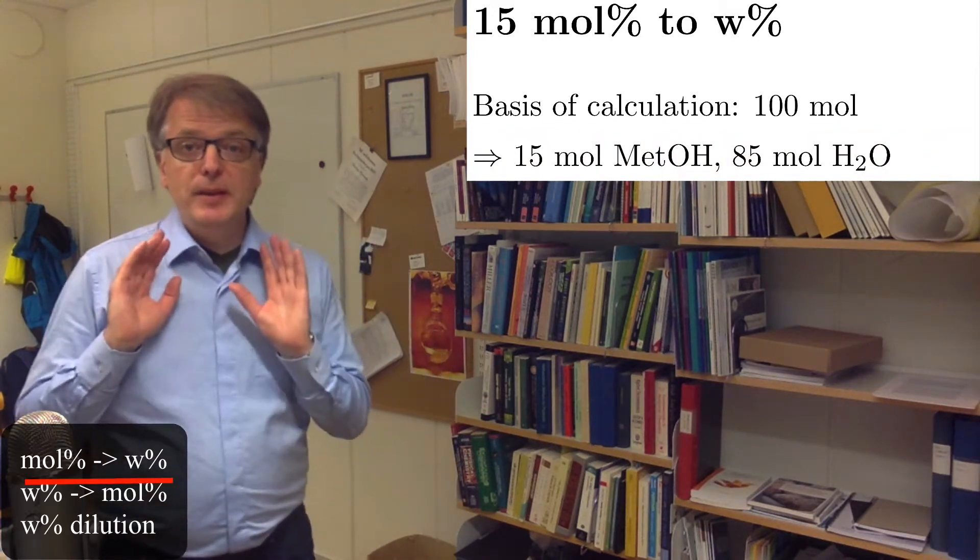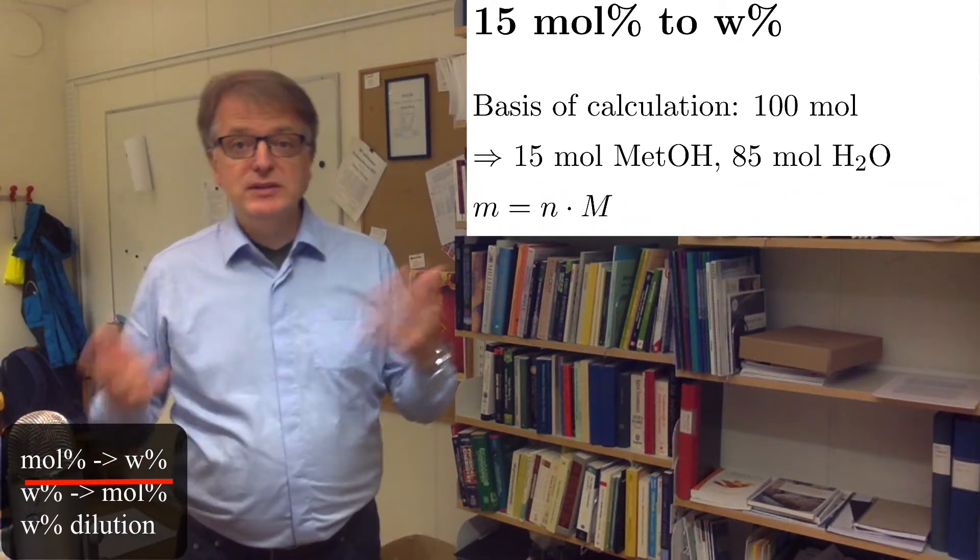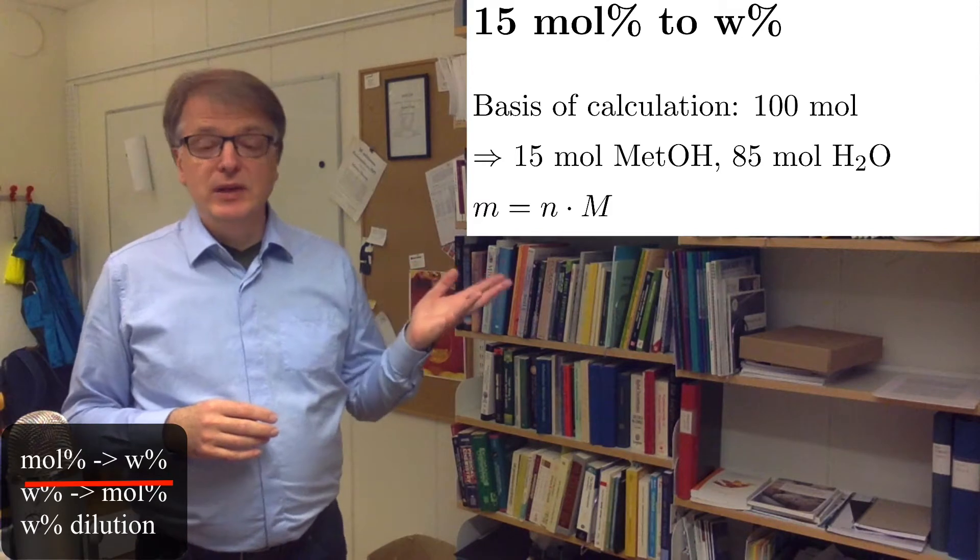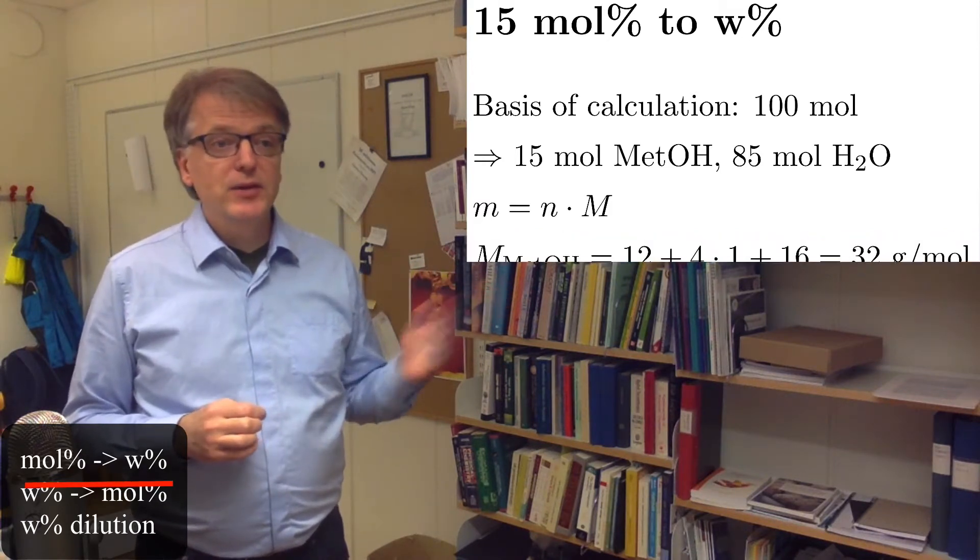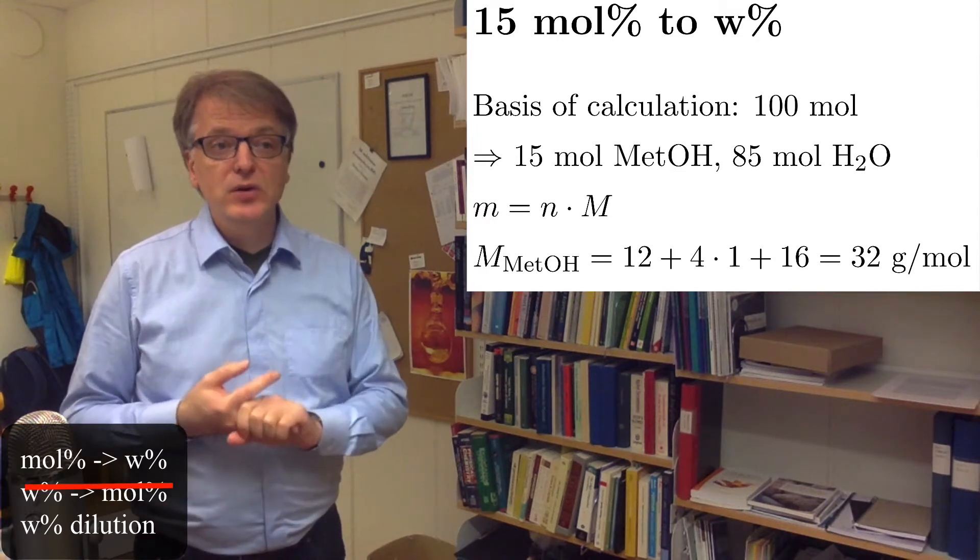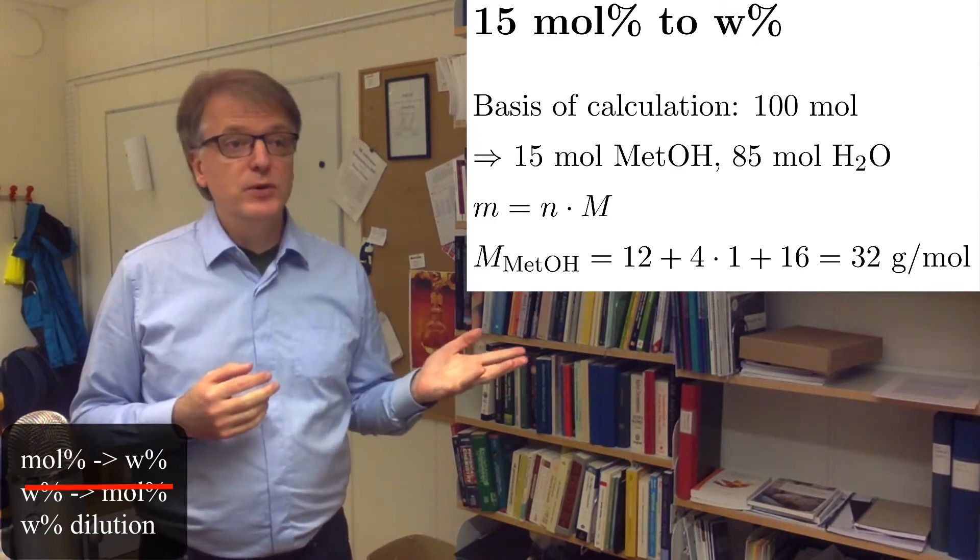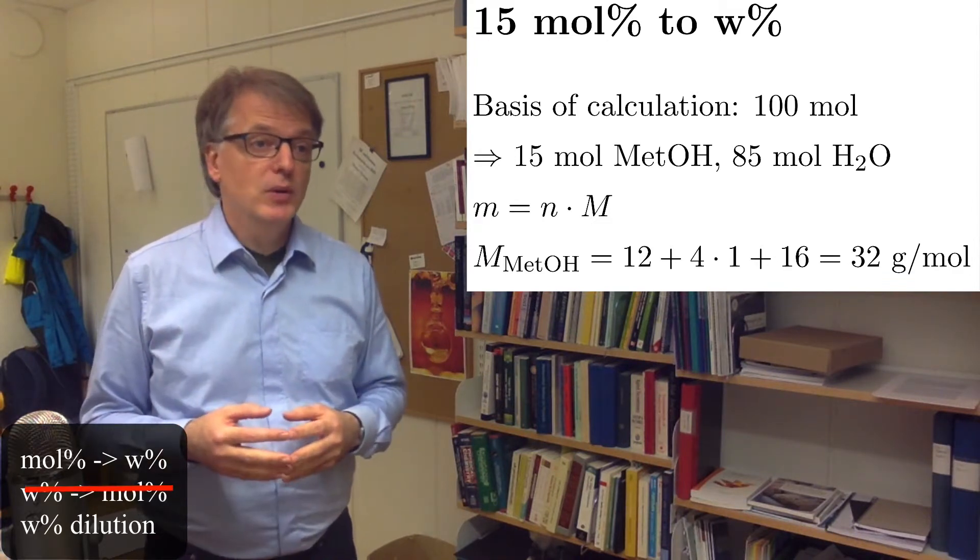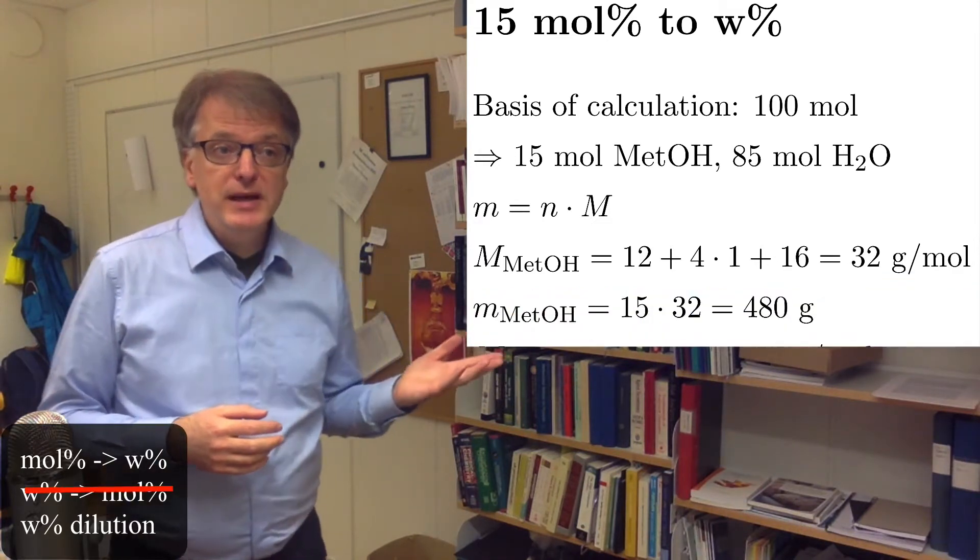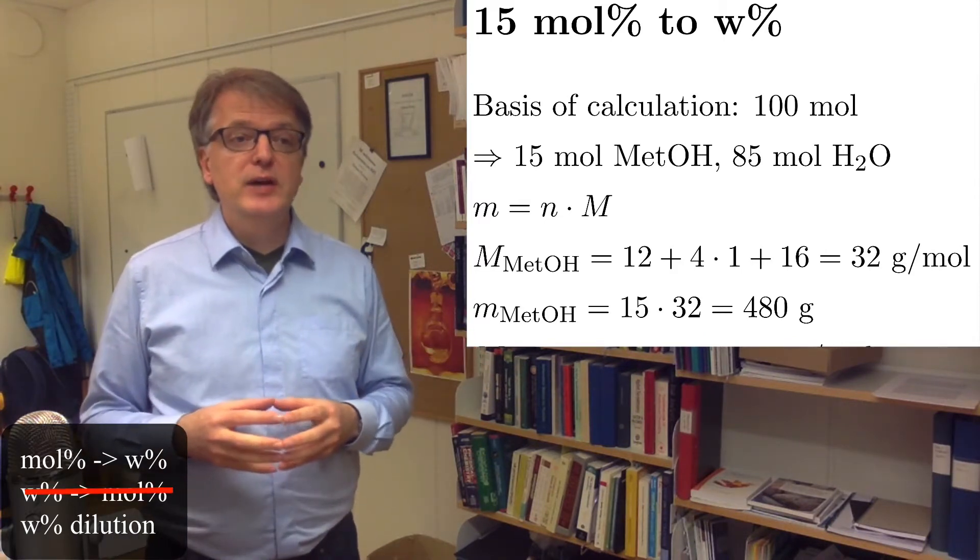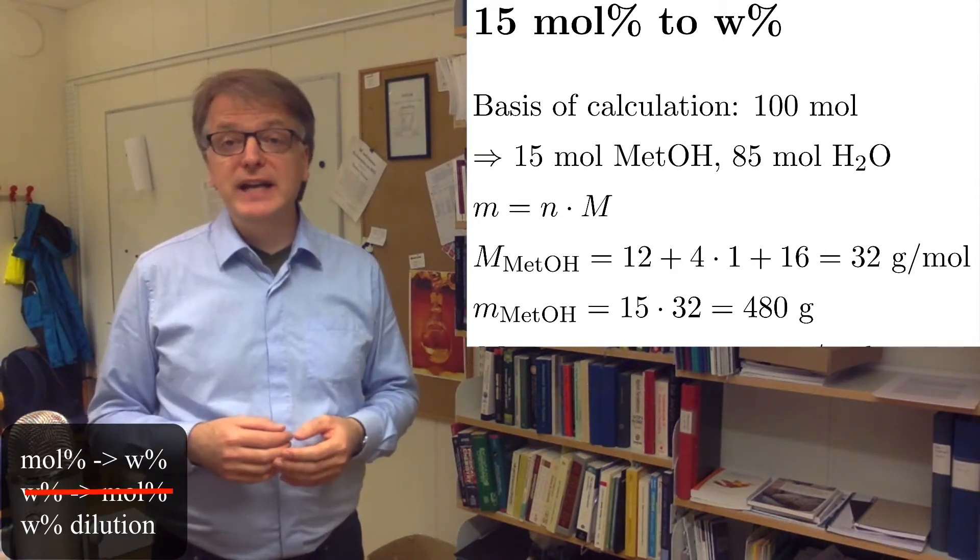Now, we know that the mass equals the number of moles times the molar weight. So, we need to know the molar weight. For methanol, that's one carbon, four hydrogen atoms, and one oxygen. So, we get 12 plus 4 times 1 plus 16, which gives us 32 grams per mole. And we can calculate the mass as 15 moles of methanol times 32 grams per mole, and we get 480 grams.